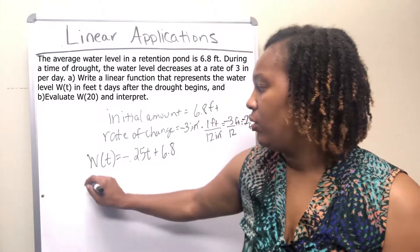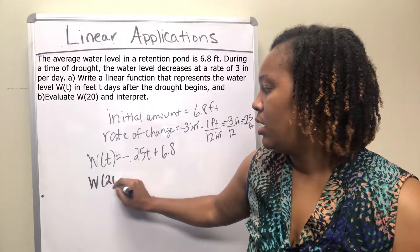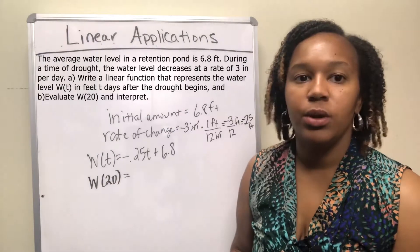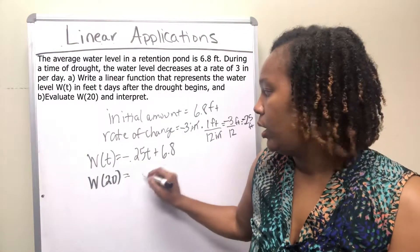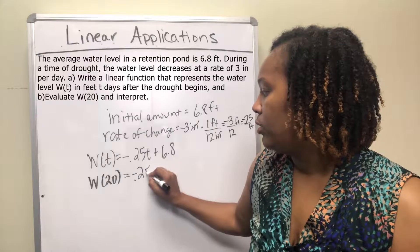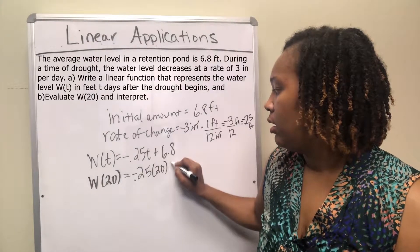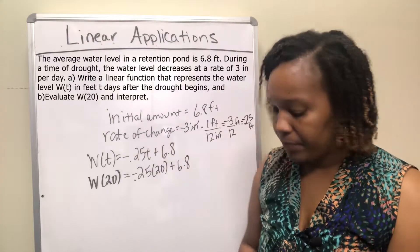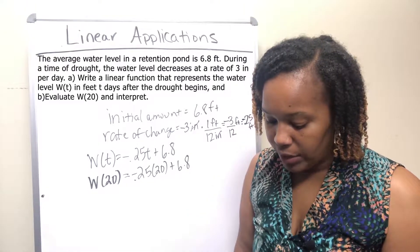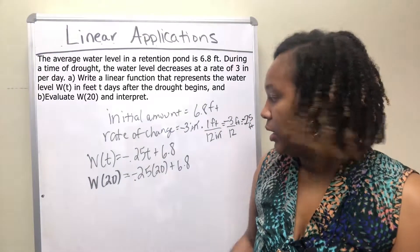And so if you evaluate this at W of 20, that means wherever there's a T, you replace it with a 20. You get negative 0.25 times 20 plus 6.8. Negative 0.25 times 20 is negative 5.